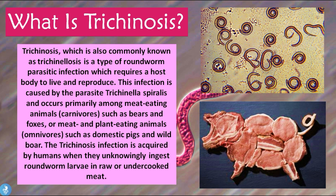From this definition we understand that trichinosis is caused by the parasite Trichinella spiralis — this is what it looks like microscopically. The parasite usually infects carnivorous and omnivorous animals such as bears, foxes, and domestic pigs, and can only be transmitted to humans if we unknowingly ingest larvae found in raw or undercooked meat. Let's take a closer look at how one can contract trichinosis.